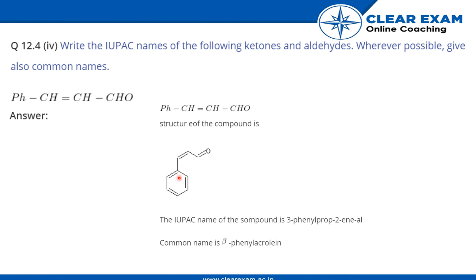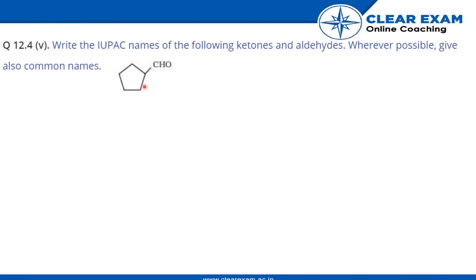So this is a phenyl group, CH, and CHO at the end. The name will be 3-phenylprop-2-en-al. The common name is beta-phenylacrolein. This is another structure shown to you.